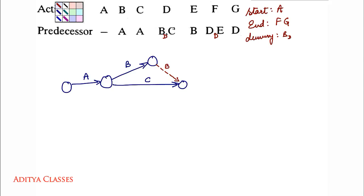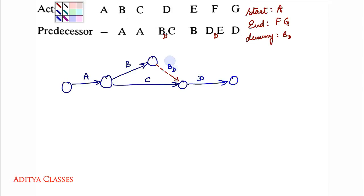Remember, we represent dummy activities by a dashed arrow. So this will be a dummy of B. We are through with A, B, and C. D is coming from B and C, so we can place D here. We write it as B-subscript-D, not DB, to avoid confusion with activity D. Dashed arrows indicate it is a dummy.